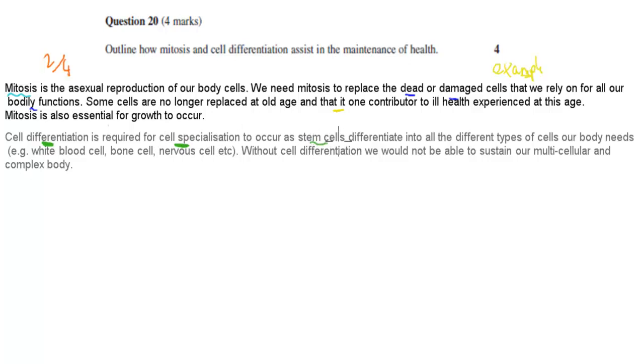And this happens when stem cells differentiate, so change into all these different types of cells our body needs. For example, white blood cells, bone cells, nervous cells, et cetera. So that's what happens when it comes to cell differentiation. We've got these stem cells differentiating into different types of cells. But why do we need that? Well, without cell differentiation, we would not be able to sustain our multicellular and complex body. Because we have so much that we need to happen - we need to have oxygen being delivered to our cells, we need to have an immune system. So you need to have all these different types of cells, and that's where cell differentiation initially comes into play.